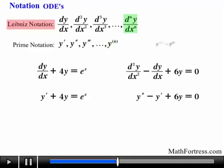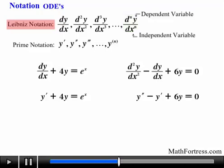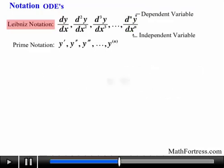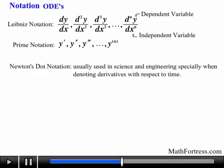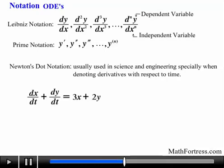Notice that Leibniz notation has an advantage over prime notation: it clearly displays both the dependent and the independent variable. For example, in a given differential equation, you can see that x represents the dependent variable and t is the independent variable. In addition, Newton's dot notation is usually used in science and engineering, especially when denoting derivatives with respect to time. For example, the third ordinary differential equation can be rewritten using Newton's dot notation, where each dot represents a derivative with respect to time.